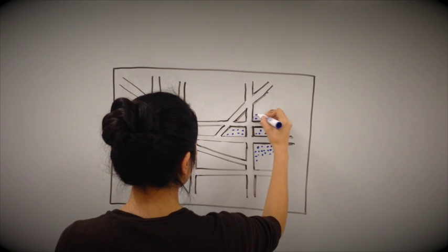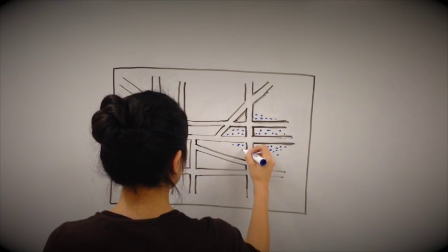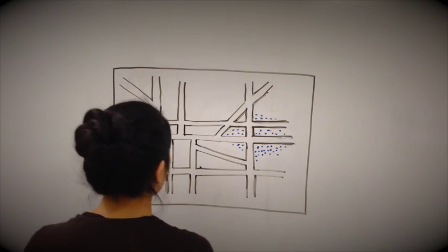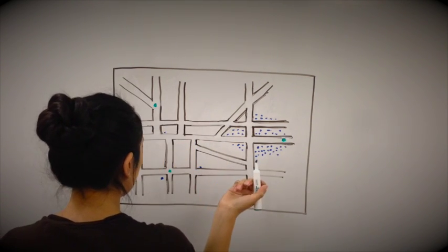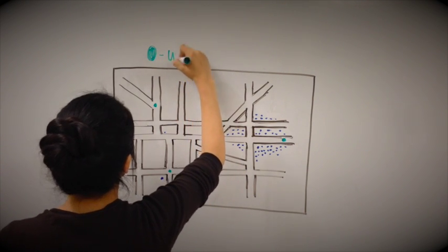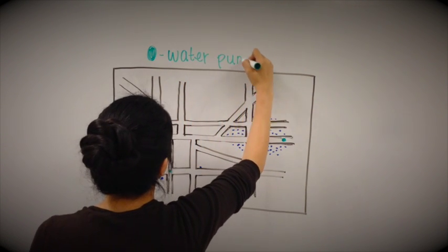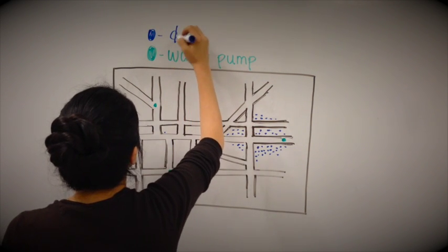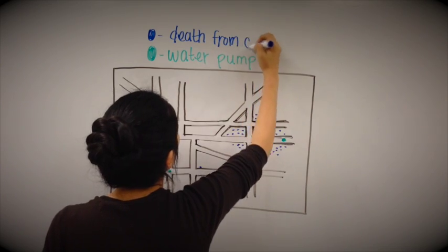Within his work, Snow stated, 'Within 250 yards of the spot where Cambridge Street joins Broad Street, there was upwards of 500 fatal attacks of cholera in 10 days.' By using a geographical grid to chart deaths from the outbreak, he was able to pinpoint the source, which was a water pump. He is a genius!